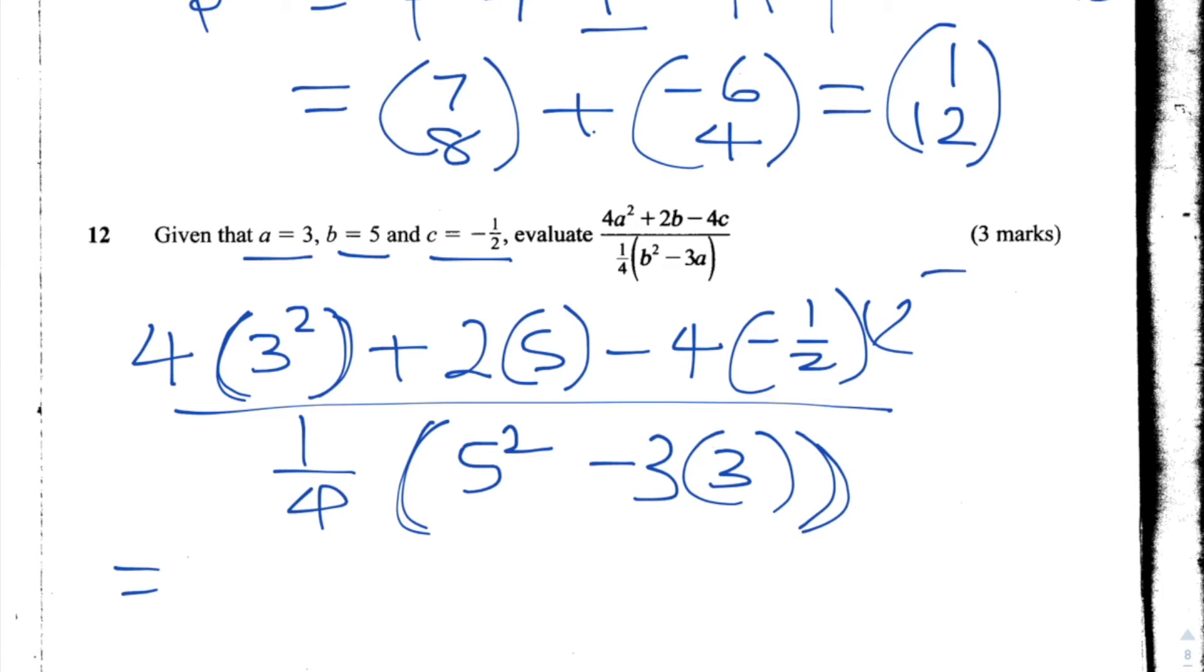So I'll carry on. I'll first do the top part. So we have 4 times 3². 3² is 9, so that's 4 times 9 which is 36, plus 2 times 5 which is 10. And then we have minus 4 times -1/2. When we times a negative number by another negative number, we get a positive number. So this is the same as 4 times 1/2, which is the same as 4 divided by 2, which is 2, so that's plus 2. All divided by 1/4 times 5² which is 25, minus 3 times 3 which is 9. 25 minus 9 is 16, so that's 1/4 times 16. So let's simplify the numerator even more. So that's 36 plus 10 plus 2 which is 48.